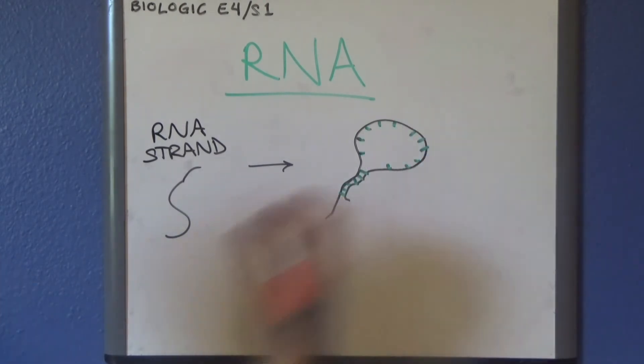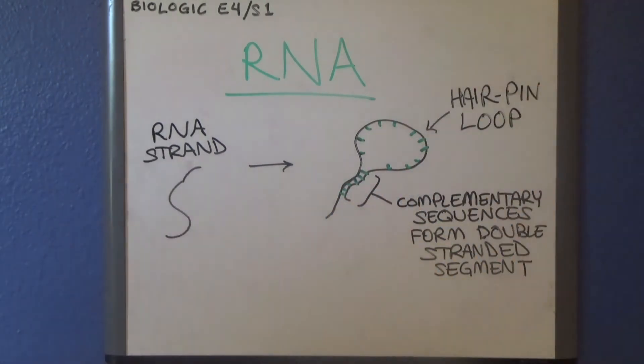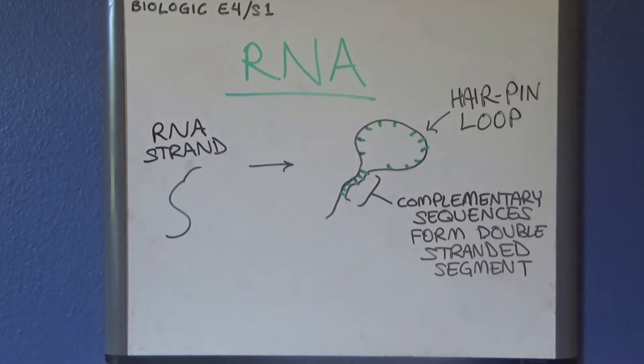The nucleotide bases on RNA, which include A, C, and G, and U instead of T, can engage in complementary base pairing just like DNA, so it can loop back on itself and form little short double-stranded segments within the greater RNA structure.